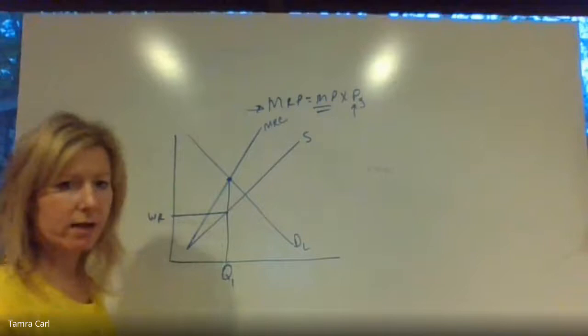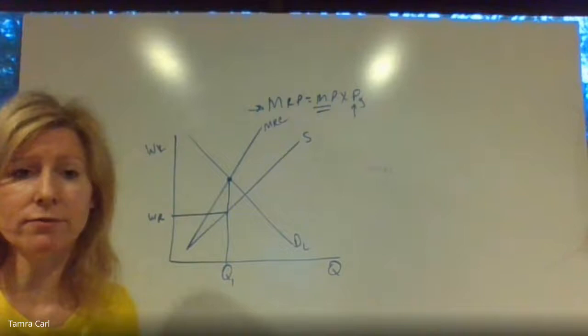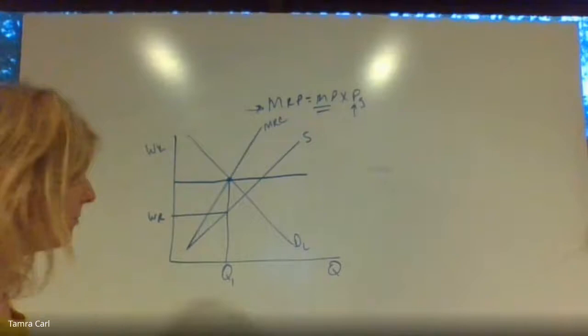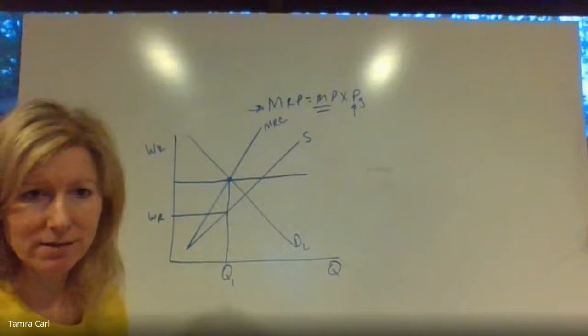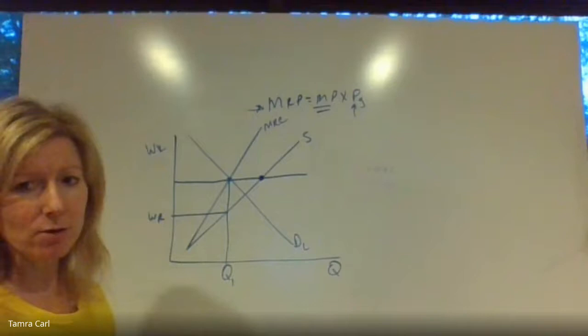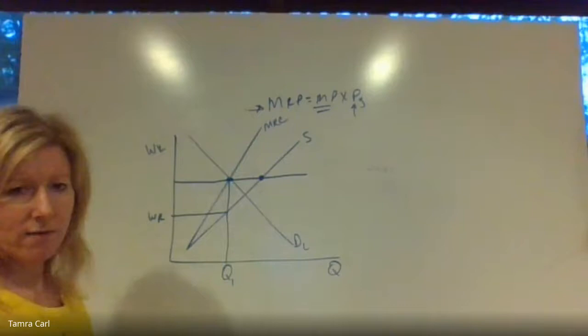This is the wage rate and this is the number of workers. I could also throw in a minimum wage on this monopsony graph. If someone doesn't remember to take it down to the supply curve, they might think there would be no unemployment. But you have to remember: the supply shows the people willing and able to supply their labor at that minimum wage, and the demand shows the amount demanded at that wage rate. As a result, you have an unemployment gap.